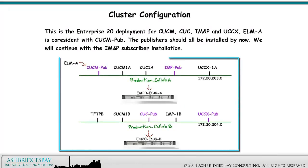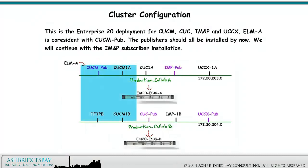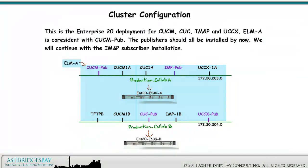This is the Enterprise 20 deployment for CUCM, CUC, IM&P, and UCCX. ELMA is co-resident with the CUCM Pub. The publishers should all be installed by now, and we will continue with the IM&P subscriber installation.